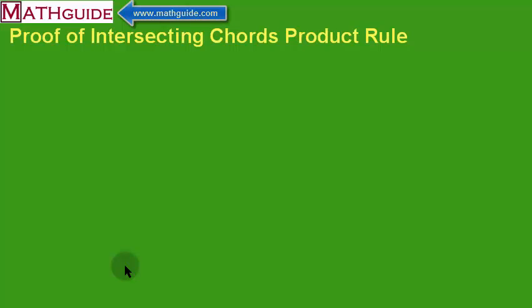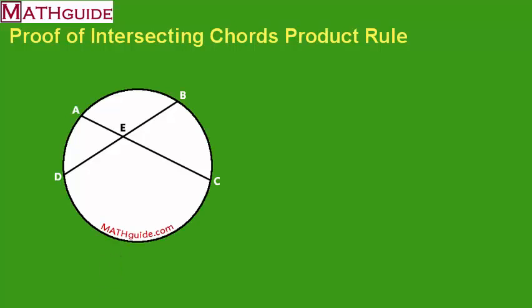We're going to take a look at intersecting chords and prove that the product rule is correct. Alright, let's start with a diagram.